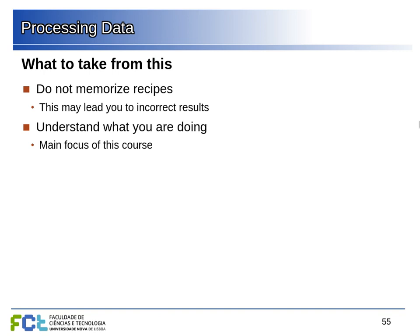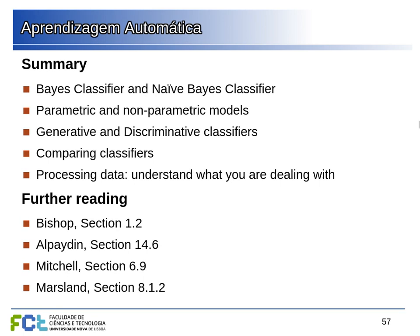To summarize, we saw the Bayes classifier and naive Bayes classifier. The key insight is that assuming conditional independence of features given the class simplifies the probability estimation and makes the classifier practical. Without this assumption, we would need too much data. We also saw the difference between parametric and non-parametric models — non-parametric models require retaining training data. Finally, naive Bayes is a generative classifier: since we learn feature probability distributions per class, we can generate new synthetic examples by sampling from those distributions.